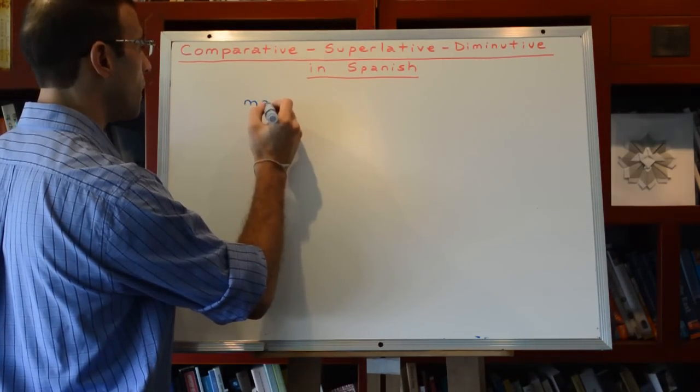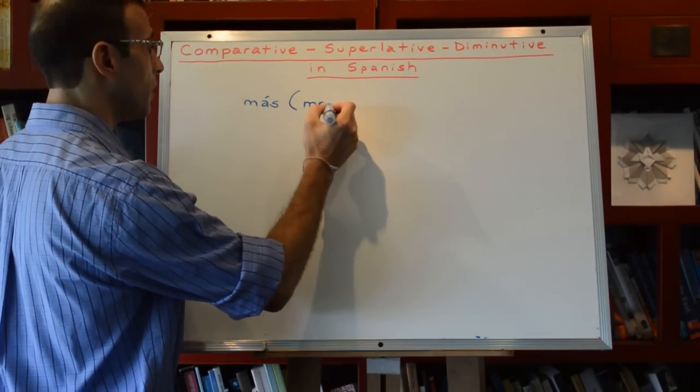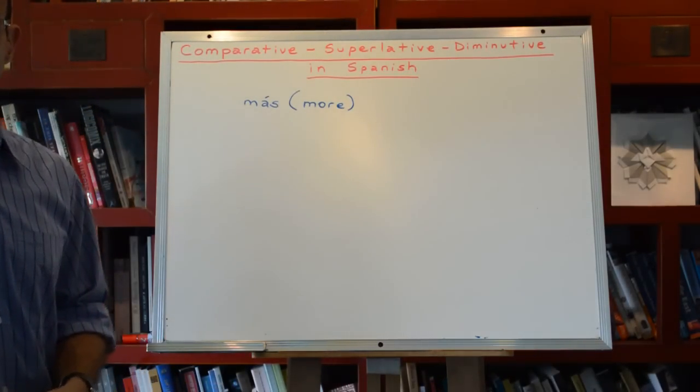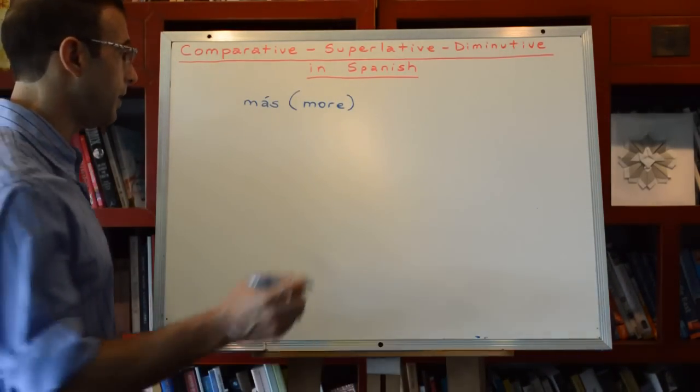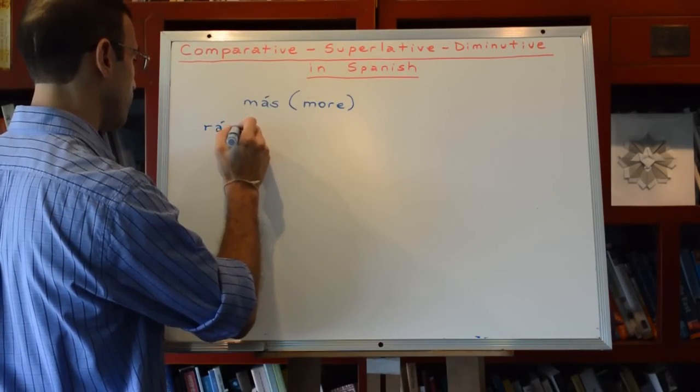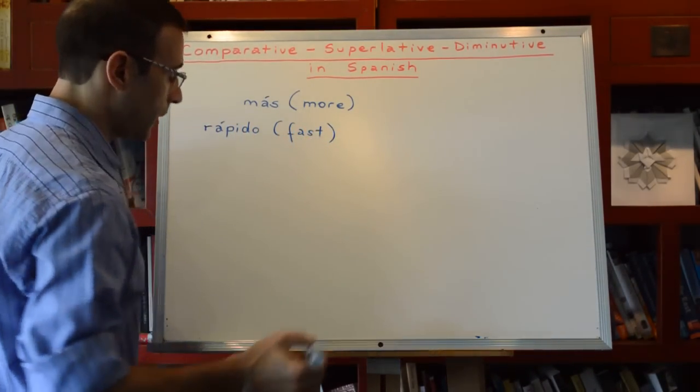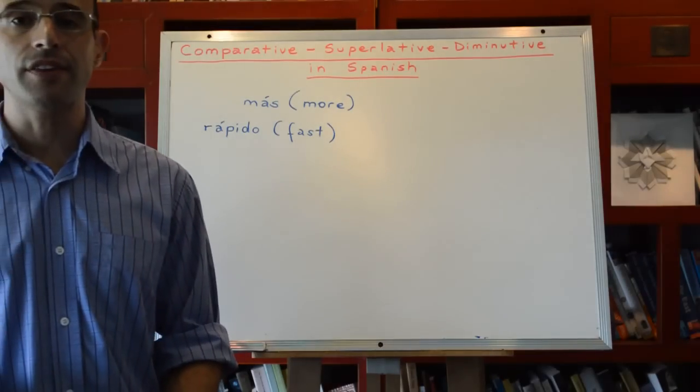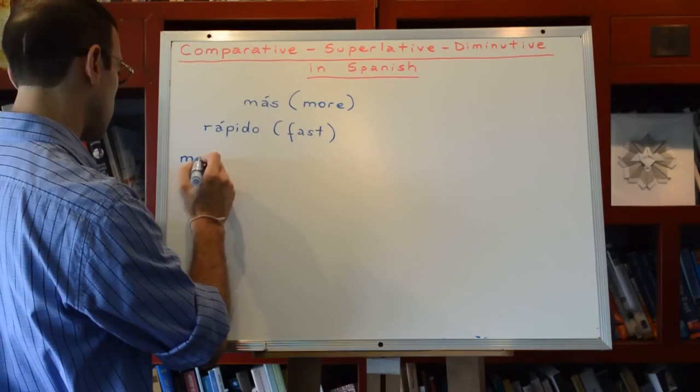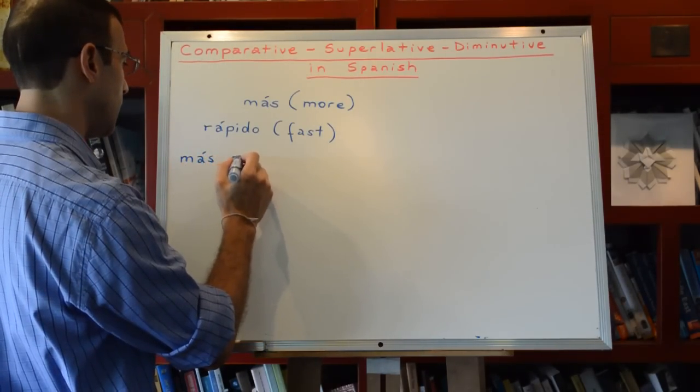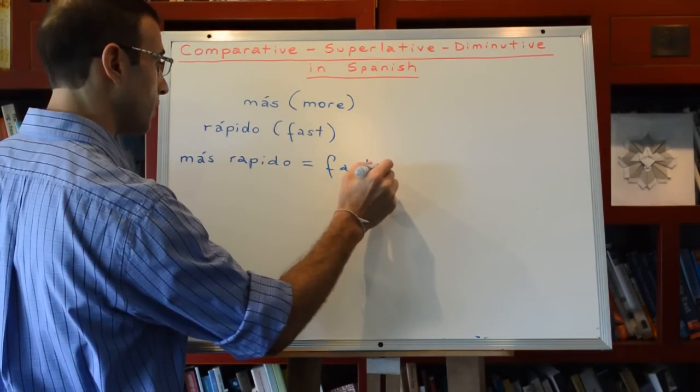We just add the word más, which means more, before the adjective. So, for example, if we have the adjective fast, which is rápido, rápido means fast. So in English the comparative would be faster. In Spanish we just add más, más rápido, for faster.